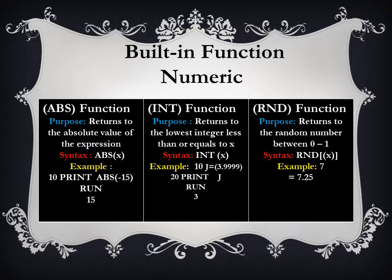First, let's study numeric functions. The first numeric function is the abs function. The abs function returns the absolute value of any expression on our output screen. Its syntax is: abs(x). In the example, on line 10 we print abs(-15). When we execute this program, it does not show the minus sign — instead it returns the absolute value, which is 15, on our output screen.